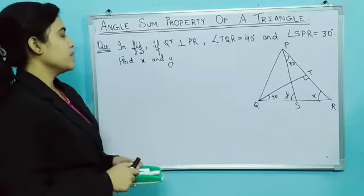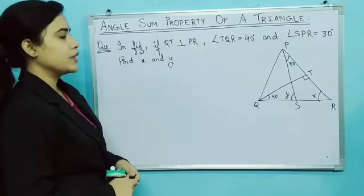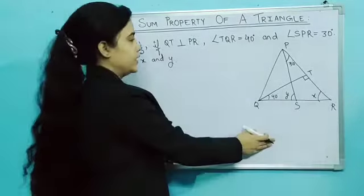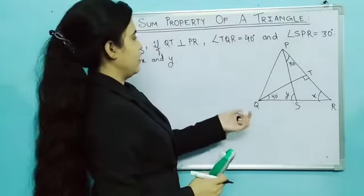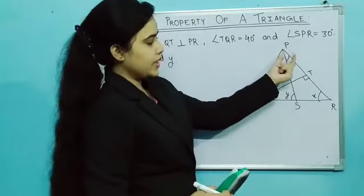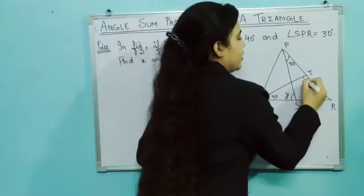So this is a question based on the theorem. In the figure, if QT is perpendicular to PR, this is the figure given. So here, QT is perpendicular to PR. That means QT is 90 degree angle.